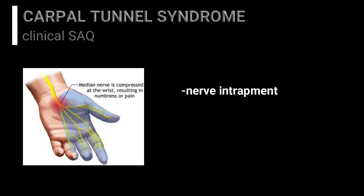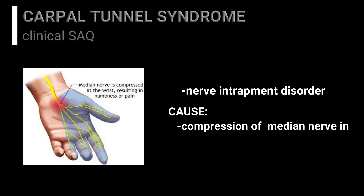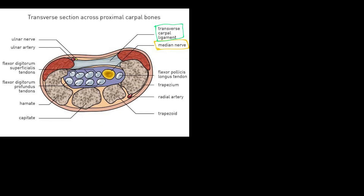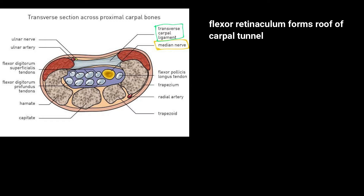Carpal Tunnel Syndrome is a nerve entrapment disorder which occurs due to the compression of the median nerve in the carpal tunnel. If we see the cross section of the hand in the bony arch or carpal arch, the flexor retinaculum or transverse carpal ligament forms the roof of the carpal tunnel.